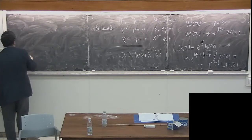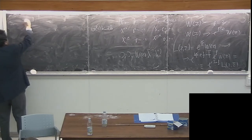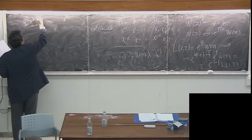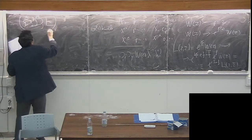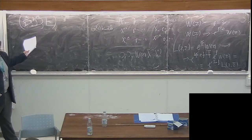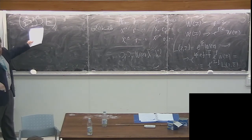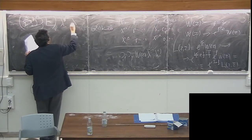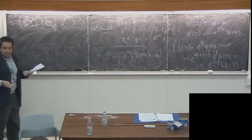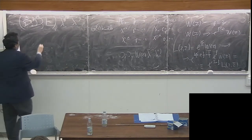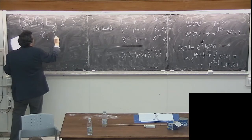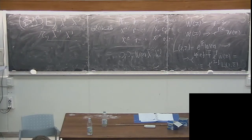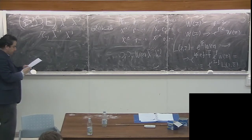In supergravity we find D-hat_{IJ} L, which is still a section of the U(1) bundle with the same weight because these are covariant derivatives. Then lambda bar^{dot I} lambda^{dot J} — and this is invariant. This is what we get, and this is the mass term for the spinors.